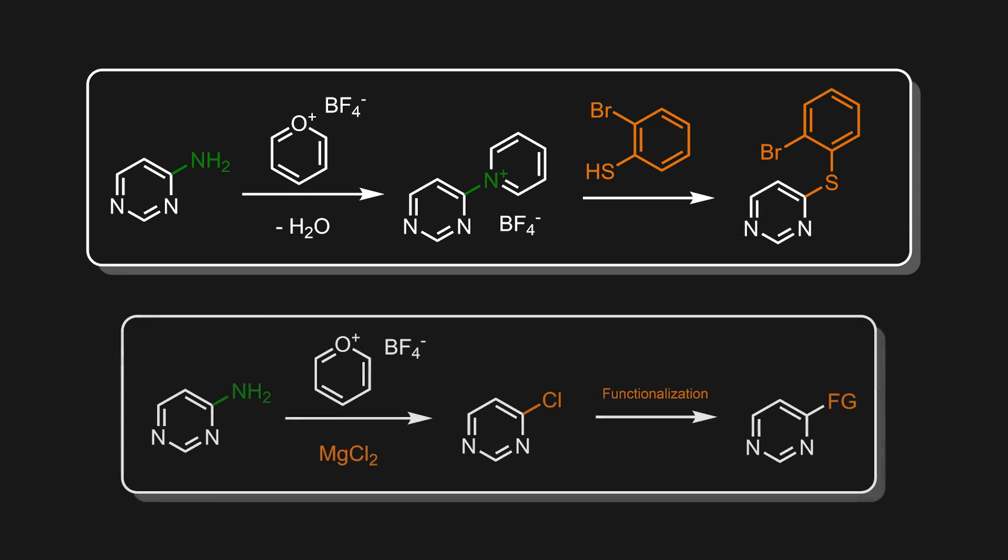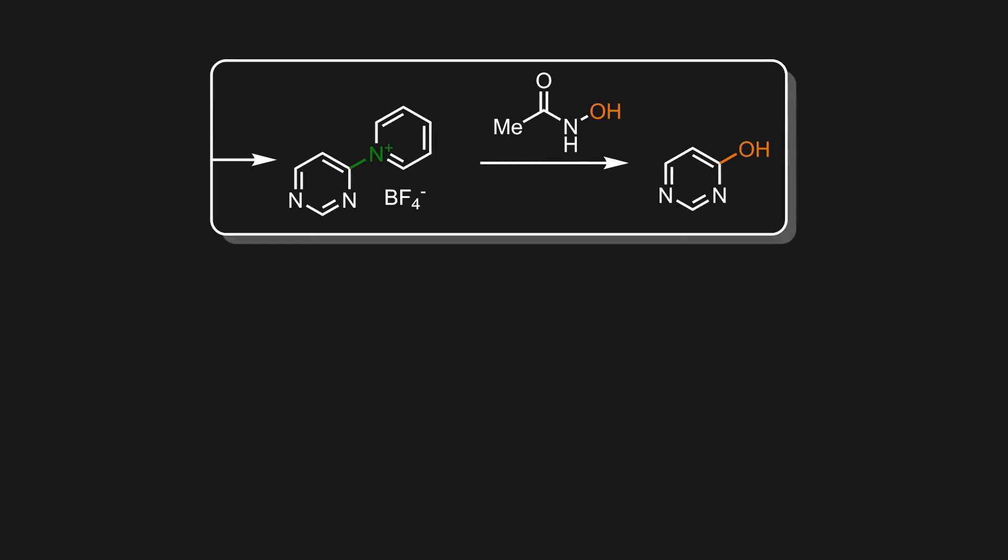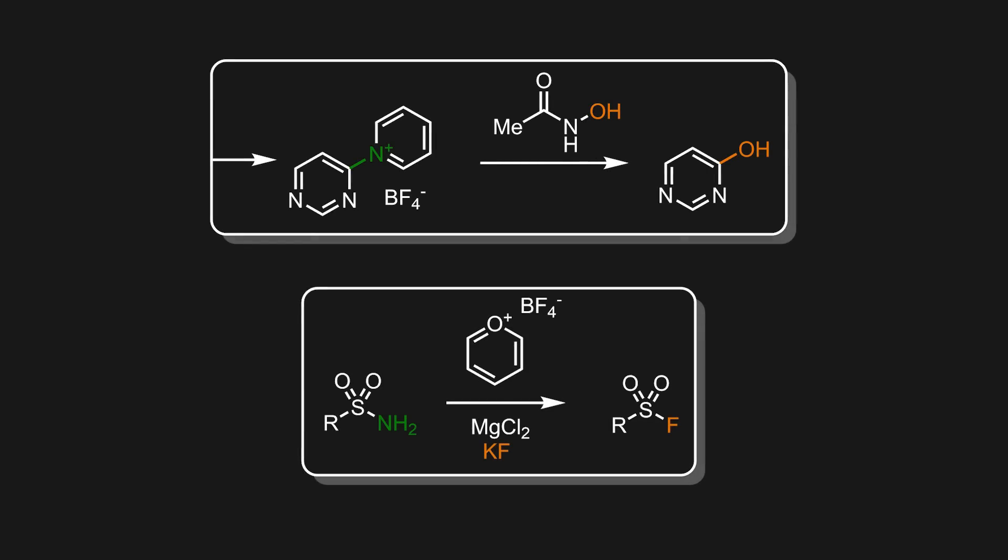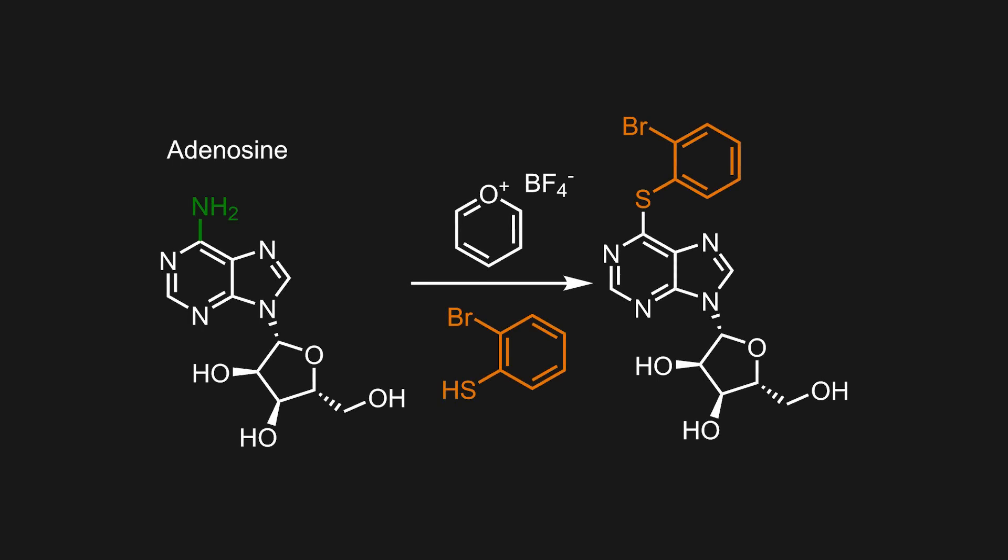Alternatively, you could simply add a chloride source, like magnesium chloride, and form the corresponding chlorinated product, which can be used to attach other functional groups. Other examples include installation of a hydroxyl or the fluorination of sulfonamides. These are all very handy transformations,